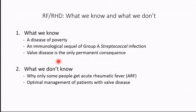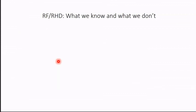What we really don't know is why only some people develop rheumatic heart disease or acute rheumatic fever — only between 0.3 and 3% of people with a sore throat develop acute rheumatic fever. Tragically, we also don't know how to manage patients who have valve disease, because all the data for management of valve disease comes from non-rheumatic valvular heart disease and may not apply to these patients. The critical problem is really about what we think we know and we really don't know.